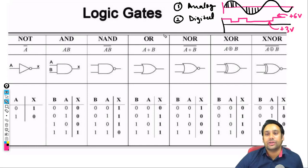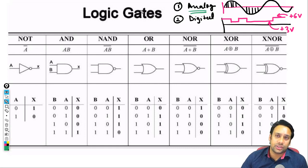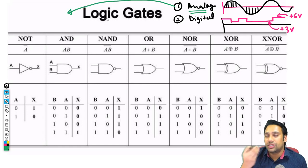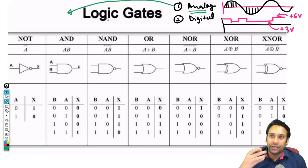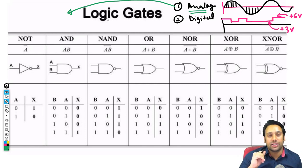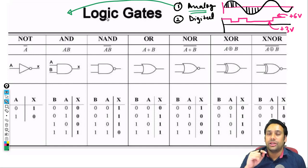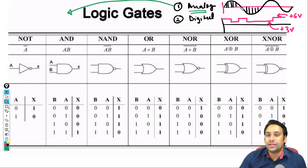Digital signals travel in this form — either they will be one or they will be zero. Most of the time, one is represented as plus six volts और zero को plus three volts के साथ represent करते हैं. But then why don't we use analog signals in our digital computers? Because जब भी आप analog signal को use करेंगे, there is a possibility of distortion in the signal — जैसे signal को एक location से दूसरी location पर send करते हैं, there can always be electromagnetic distortions.